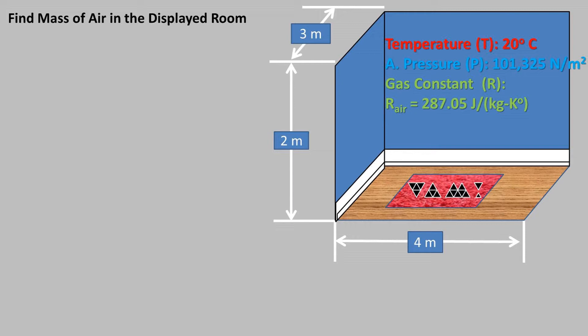This room is filled with air with a gas constant of 287.05 joules per kilogram Kelvin. We will be using the variant of the ideal gas law equation which is PV = mRT, which stands for the absolute pressure, which is the gauge pressure plus atmospheric pressure in pascals,